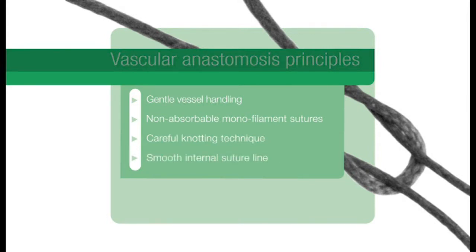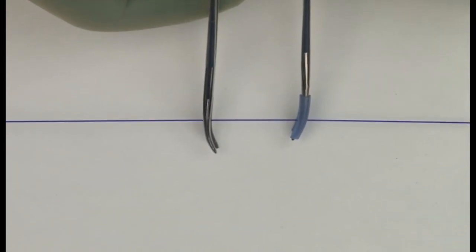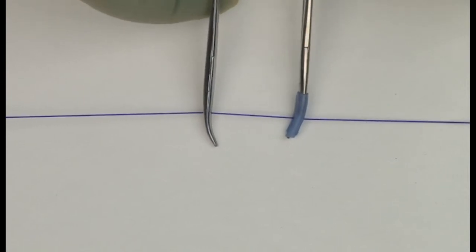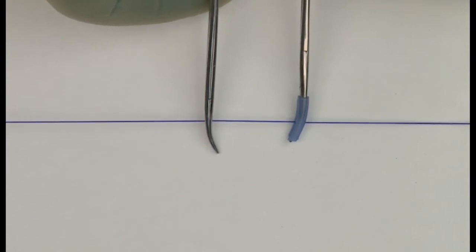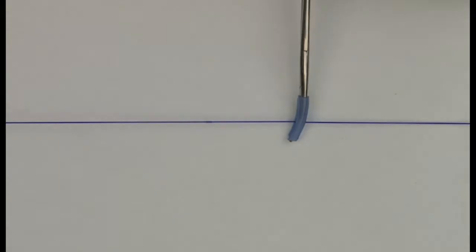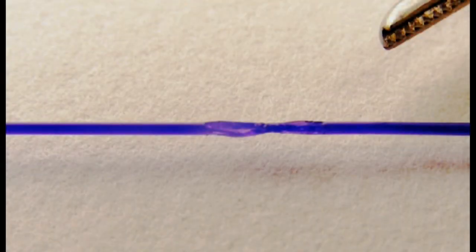A smooth internal suture line is essential. The hemostats should have rubber shods on each end to prevent damage to the proline suture material used in the anastomoses. The integrity of monofilament sutures depends on the outer layer for strength, which can be damaged by grasping with clips or needle holders. The rubber shods prevent this damage.